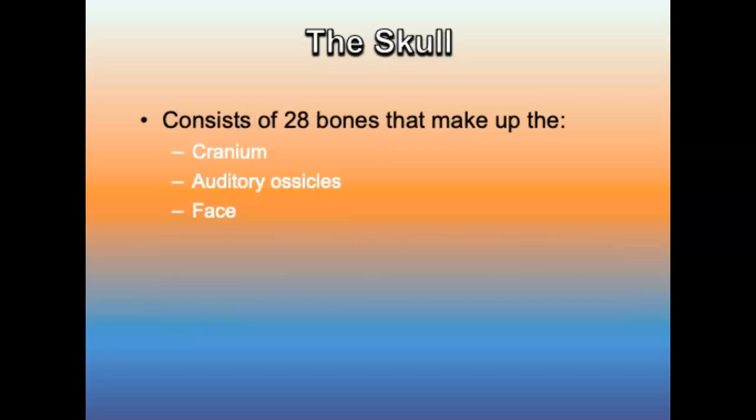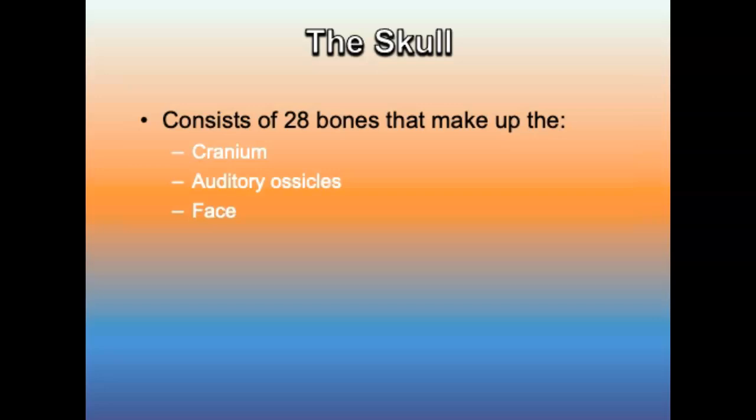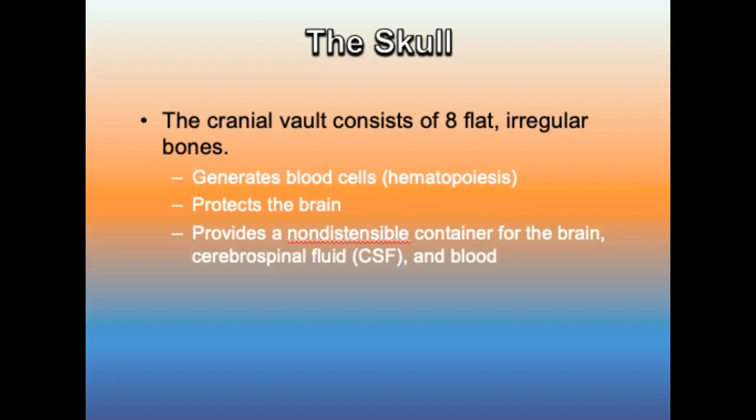The skull consists of 28 bones that make up the cranium, auditory ossicles, and the face. The cranial vault consists of eight flat irregular bones. It generates blood cells, protects the brain by directing impacts around it, and provides a container for the brain, cerebral spinal fluid, and blood. A hematoma would increase intracranial pressure, known as ICP.